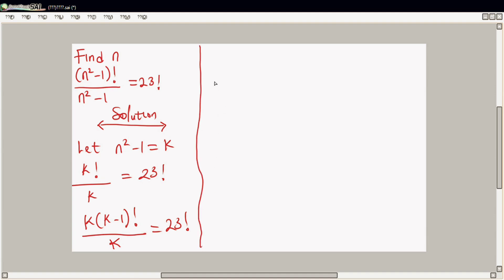From here we have k in bracket of k minus one factorial over k equal to 23 factorial. We cancel this and we are left with k minus one factorial equal to 23 factorial.